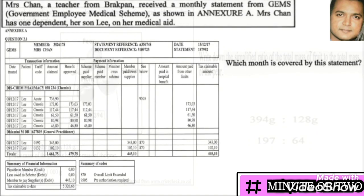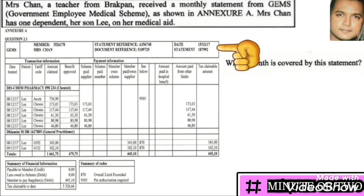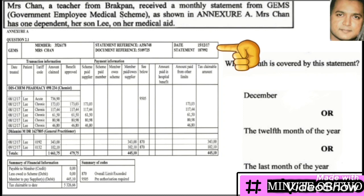Mrs. Chanda, a teacher from Brakpan, received a monthly statement from GEMS as shown in the annexure. She has one dependent — a son, Lee — on a medical aid. Remember, annexures are additional resource materials. The first question asks which month is covered by the statement. Looking at the top right-hand side, it gives a date indicating it is the 12th month.